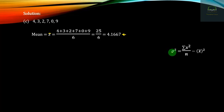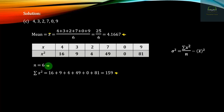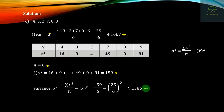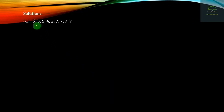The variance formula is sigma squared equals summation x squared divided by n, minus x-bar squared. The standard deviation equals the square root of the variance. The answer is: sigma squared, and then sigma equals the square root of the variance. Taking the square root gives the standard deviation, approximately equal to the square root of 9 by 1, giving approximately 3.03.